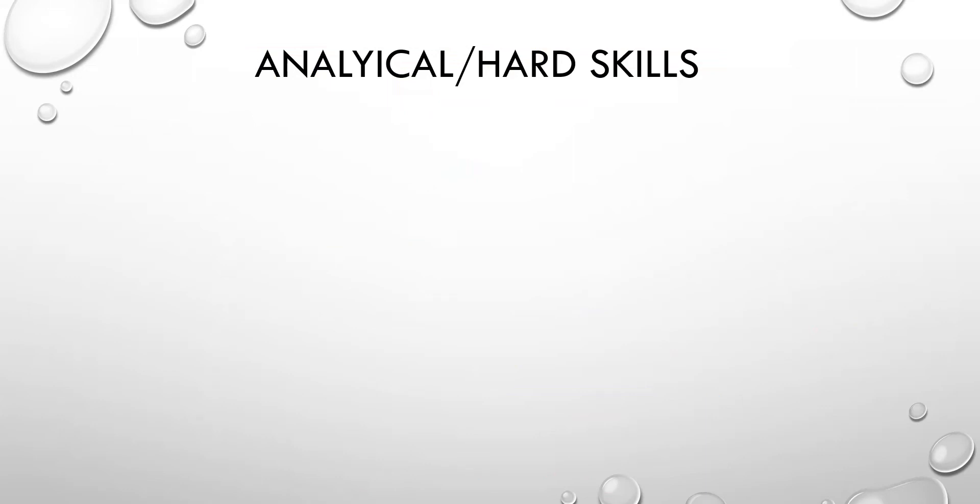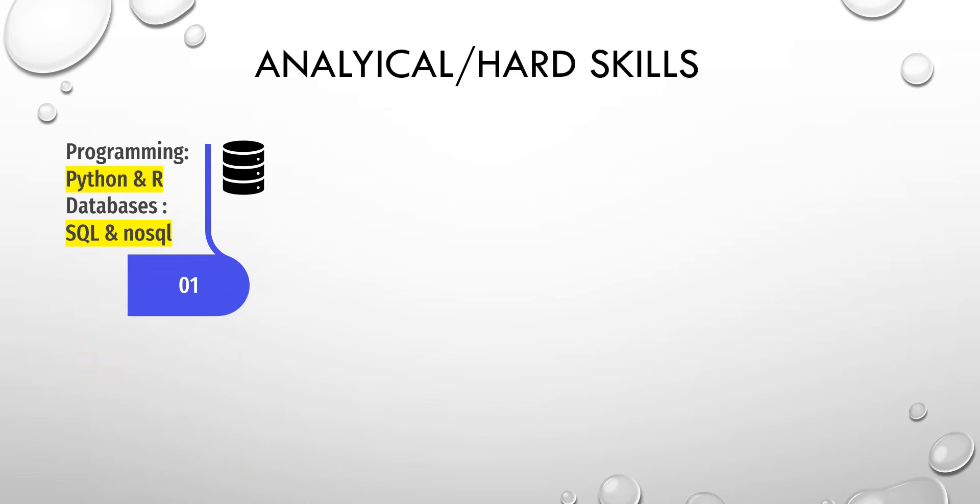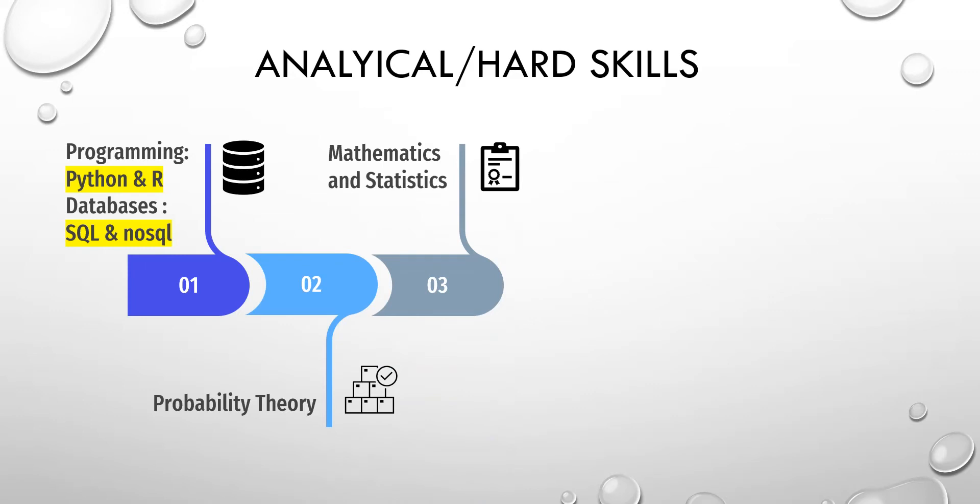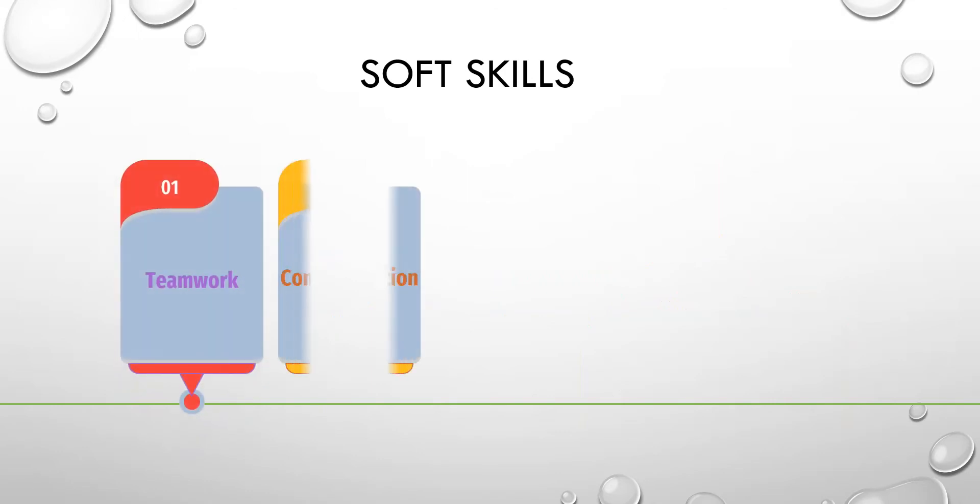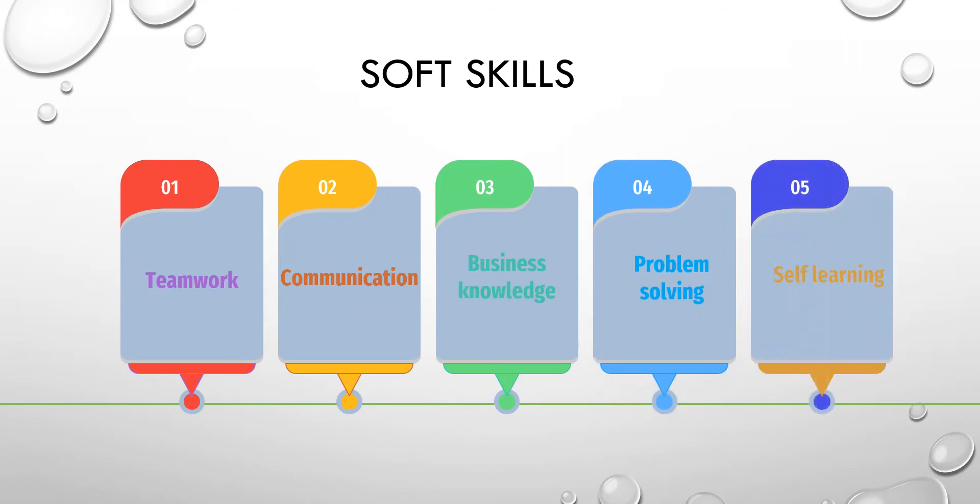Let's start with analytical hard skills. First we have programming - Python and R are the most used in data science. We also have databases where we need knowledge about SQL and NoSQL databases. The second point is probability theory, which is behind a lot of applied machine learning algorithms and is most used in natural language processing. The third point is mathematics and statistics. For mathematics we have linear algebra and calculus. The fourth point is machine learning skills, then data wrangling, and finally data visualization. We also need soft skills such as teamwork, communication, business knowledge, problem solving, and you need to keep yourself updated every day.